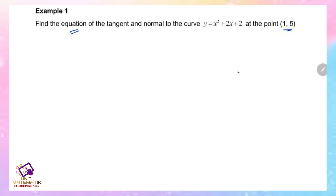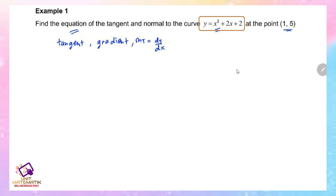For the tangent, we find the gradient mt using dy/dx. Differentiating the curve gives dy/dx = 2x + 2. We then substitute the given point x = 1, so mt = 2(1) + 2 = 4. To find the equation, we substitute the gradient and point (x1, y1) = (1, 5) into the tangent formula.